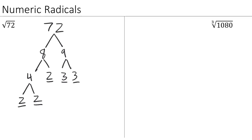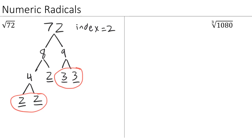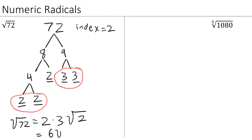Once we have our factorization, the next step is to group our numbers together based on the index of the radical. In this case we're doing a square root, so our index is equal to 2, meaning we want to group our numbers into pairs. We see a pair of 2s and a pair of 3s. Each group pulls a single number out of the radical — this group pulls a 2 out, and this group pulls a 3 out. So the square root of 72 has a 2 and a 3 outside the radical, and the leftover 2 stays inside. On the outside, 2 times 3 gives us 6, so the square root of 72 simplifies to 6 times the square root of 2.